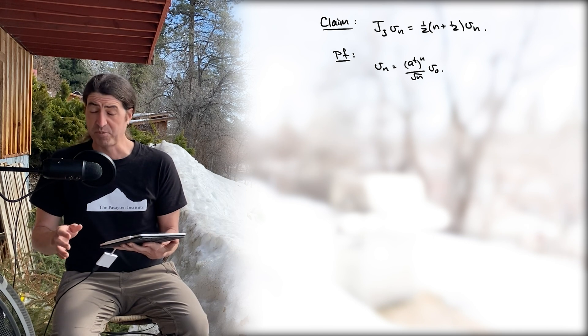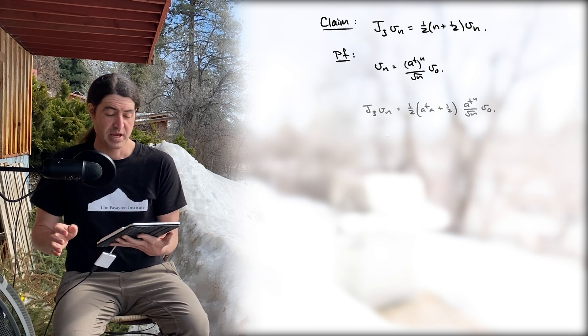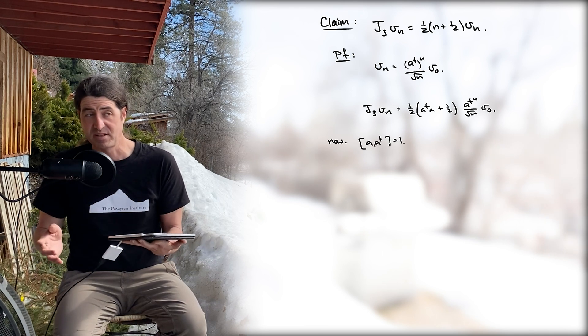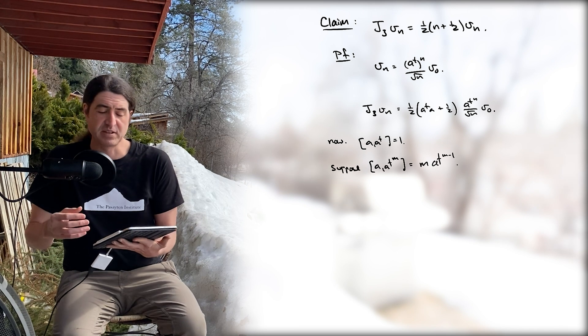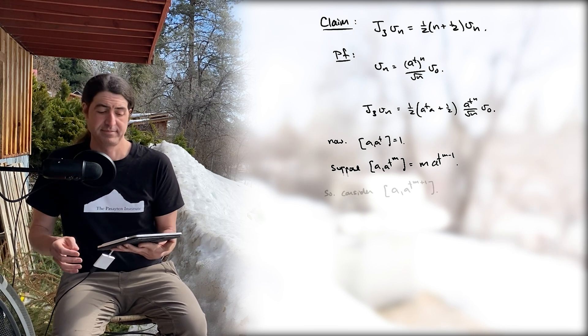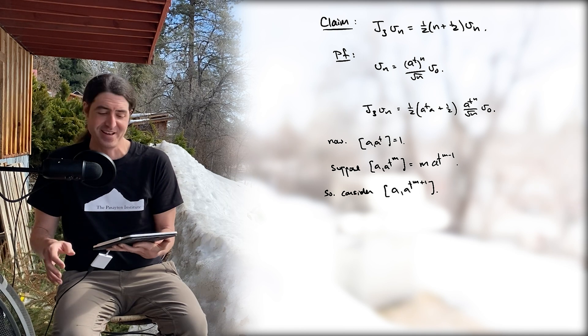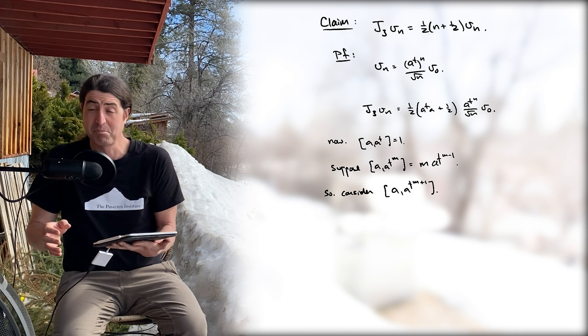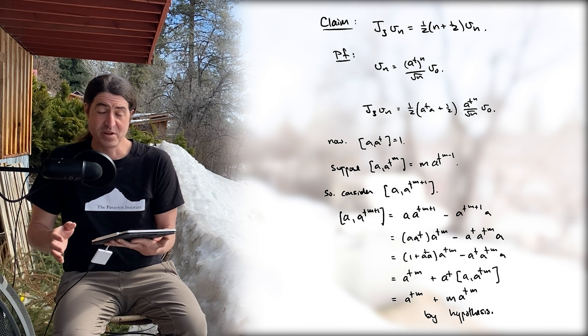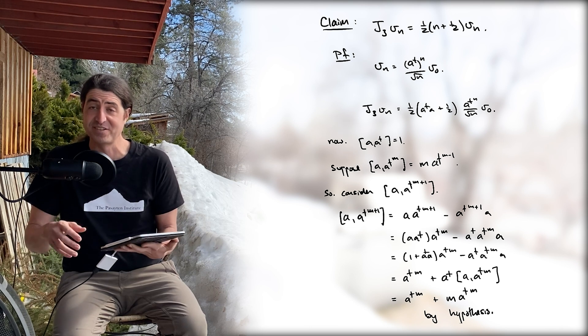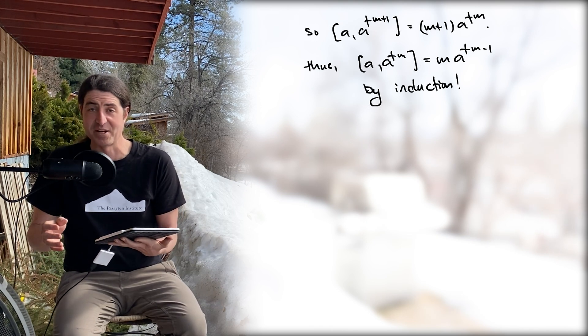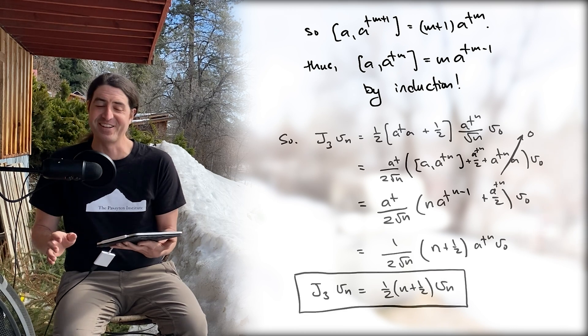Proof: recall that v_n is given explicitly in terms of a daggers operating on v0. Now we act with J3 written in terms of a and a dagger. First observe that the defining algebra of the a's and a daggers is a with a dagger equals one. Let's suppose that the commutator of a with a dagger to the m is m a dagger to the m minus one. Then let's compute the commutator of a with a dagger to the m plus one. After a bit of algebra, we find that indeed that commutator is equal to m plus one times a dagger to the m, assuming the hypothesis. Thus the commutator of a with a dagger to the m is equal to m a dagger to the m minus one by induction.